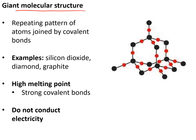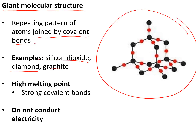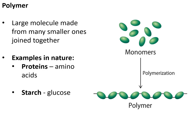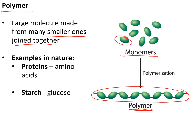Other covalent compounds form giant molecular structures with a repeating three-dimensional pattern of atoms joined by covalent bonds — for example, silicon dioxide, diamond, and graphite. In silicon dioxide, every silicon atom is joined to four oxygens and every oxygen is joined to two silicons, and that pattern repeats in each direction. They have a high melting point because melting requires breaking strong covalent bonds, and they do not conduct electricity — except graphite, which is the exception. A polymer is a large molecule made from many smaller monomers joined together. Important natural examples are proteins, made from amino acids, and starch, made from glucose monomers.